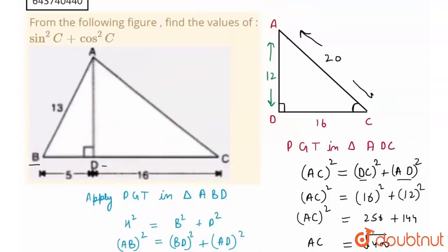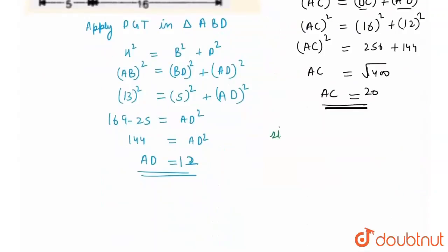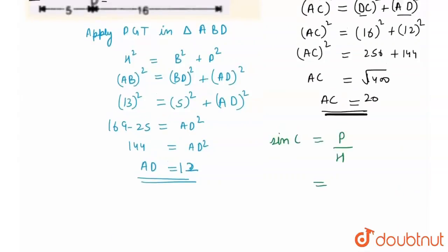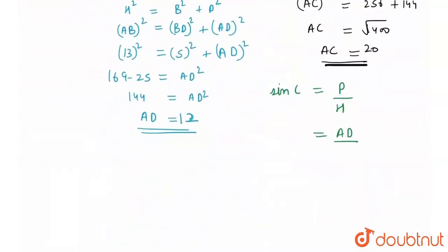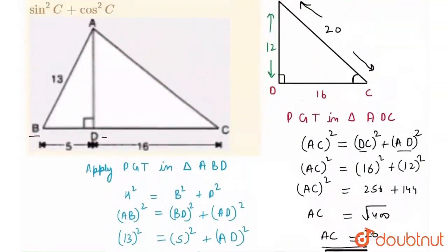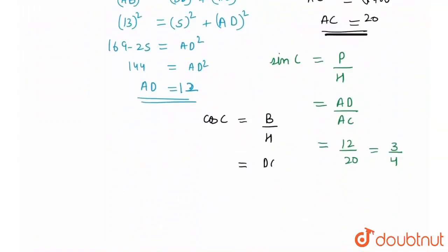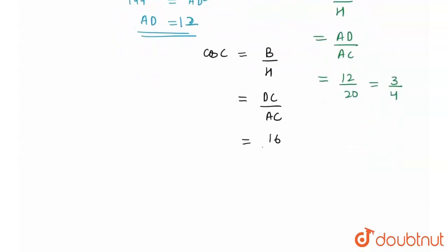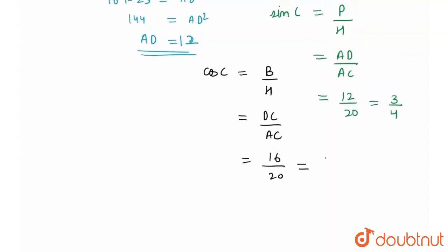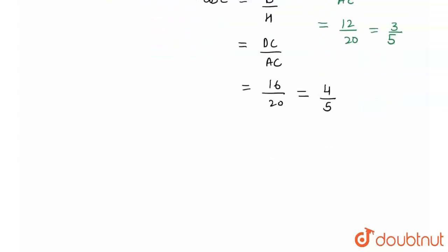Now I need to find sin C and cos C. Sin C = perpendicular / hypotenuse = AD / AC = 12 / 20 = 3/5. Similarly, cos C = base / hypotenuse = DC / AC = 16 / 20 = 4/5.